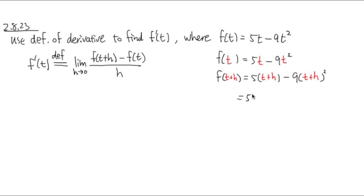5 times t is just 5t, 5 times h is plus 5h. And let's keep the minus 9 first. Open the parentheses. t plus h squared is t squared plus 2th plus h squared. Like that.